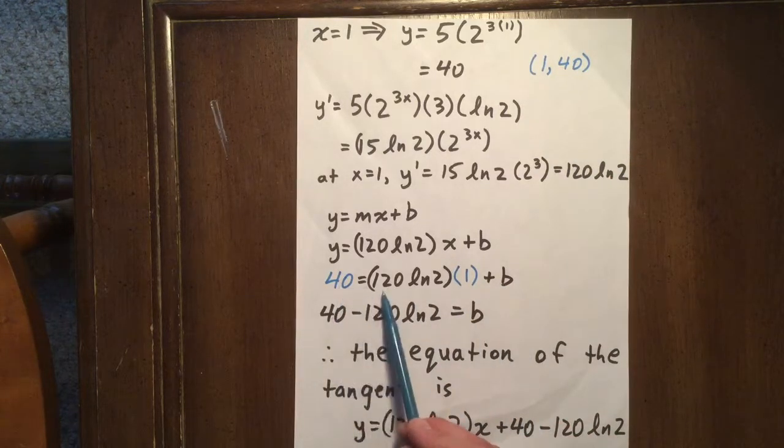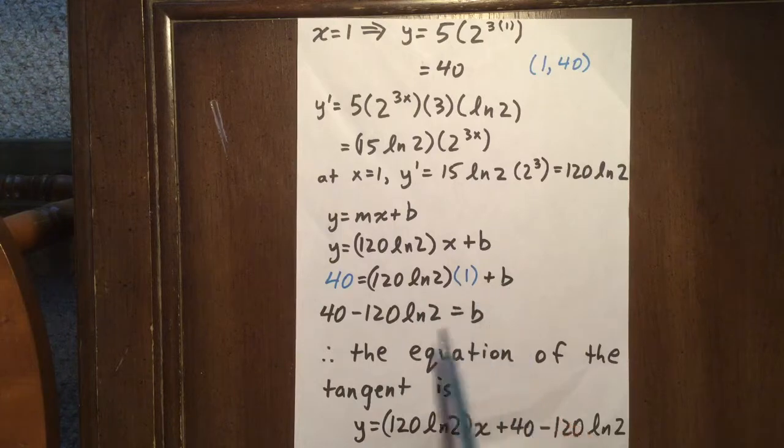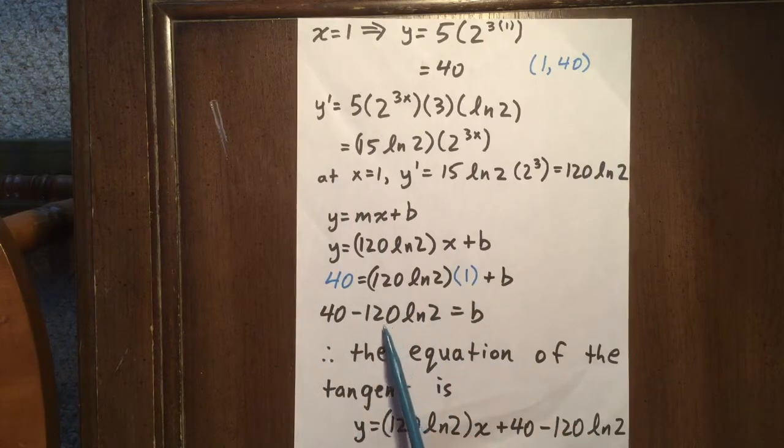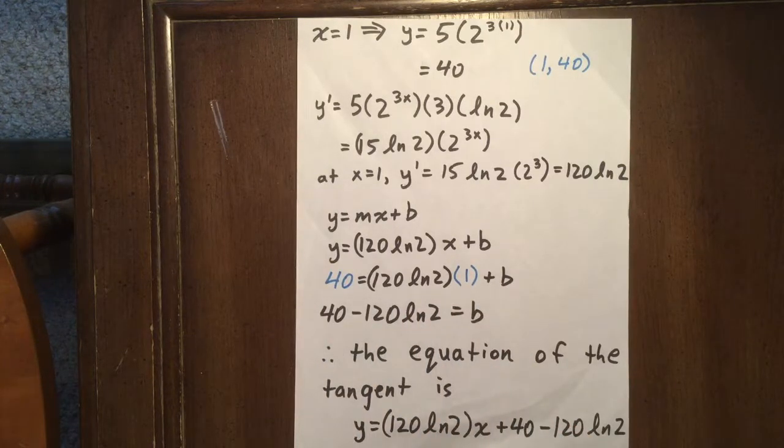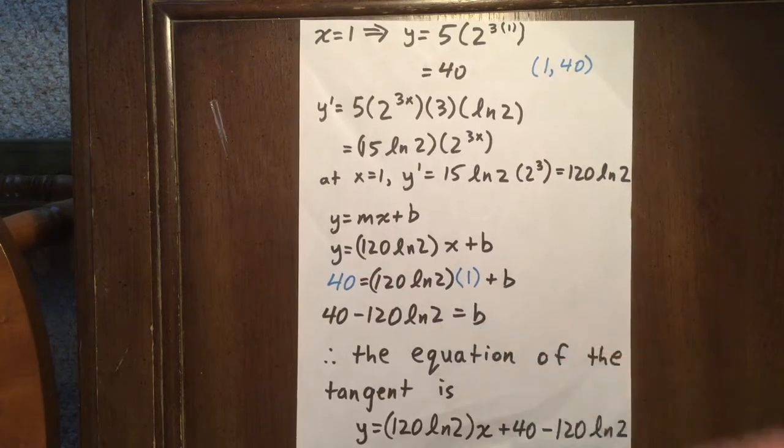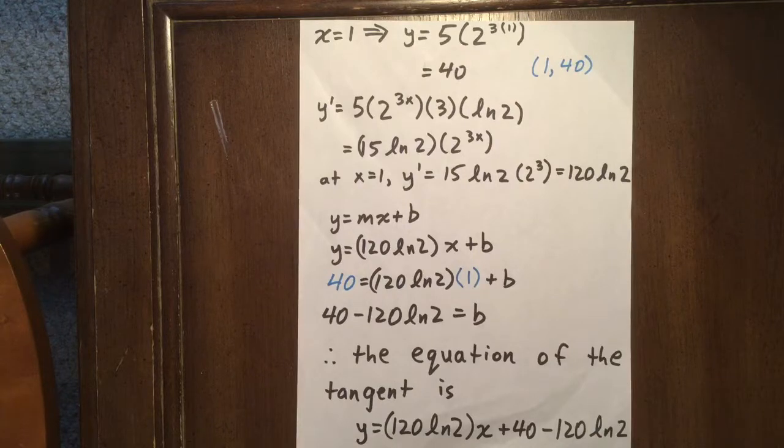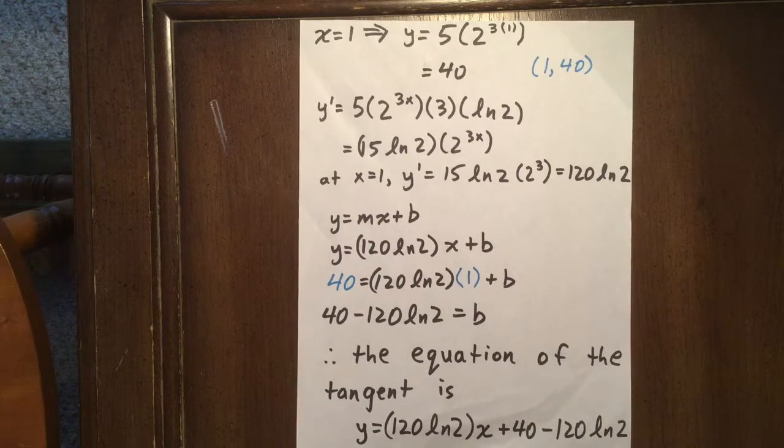So 40 equals 120 ln 2 plus b. We can subtract 120 ln 2 from both sides. Therefore, the equation of the tangent is y equals 120 ln 2 x plus 40 minus 120 ln 2.